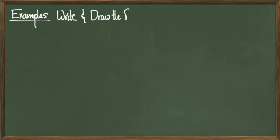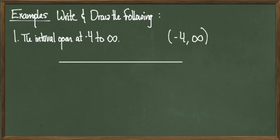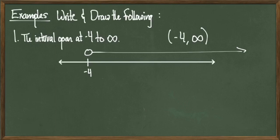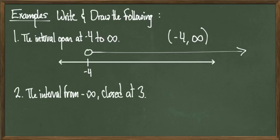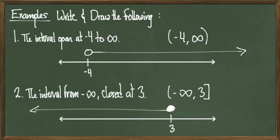We'll be given an interval described in words and need to write it out and draw it. The interval that is open at negative 4 and goes to infinity is written (-4, +∞), with an open circle above negative 4 on the number line and an arrow pointing right toward infinity. For the interval that goes from negative infinity to 3 and is closed at 3, we write (-∞, 3], with a square bracket around 3, a filled-in circle on the number line, and an arrow pointing left toward infinity.